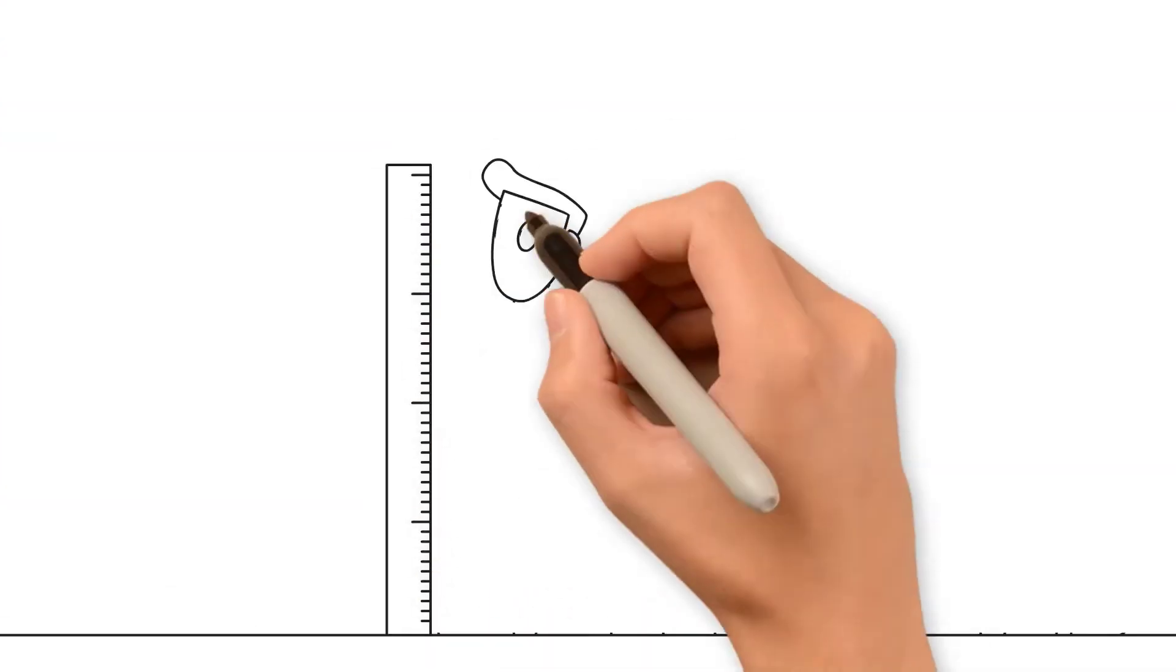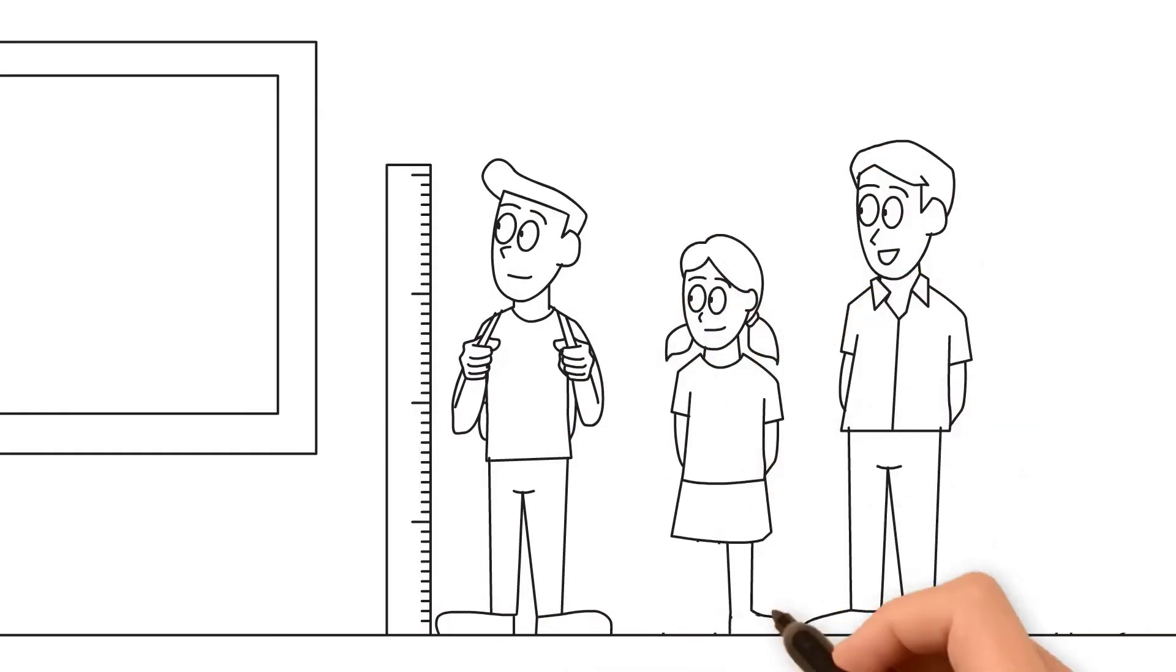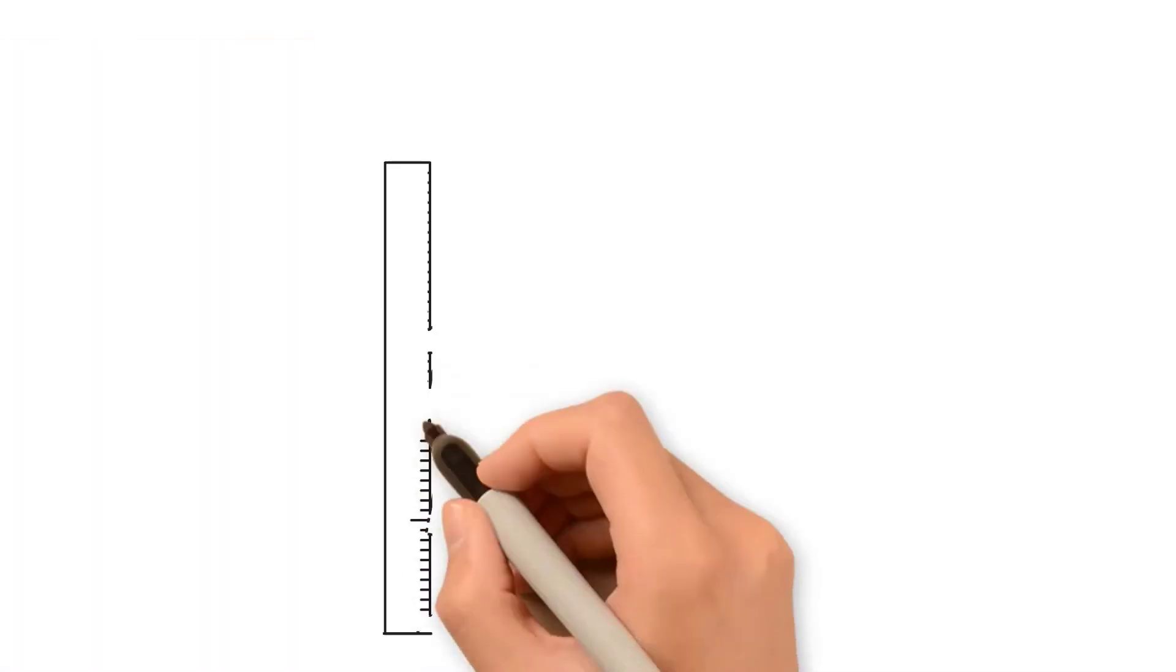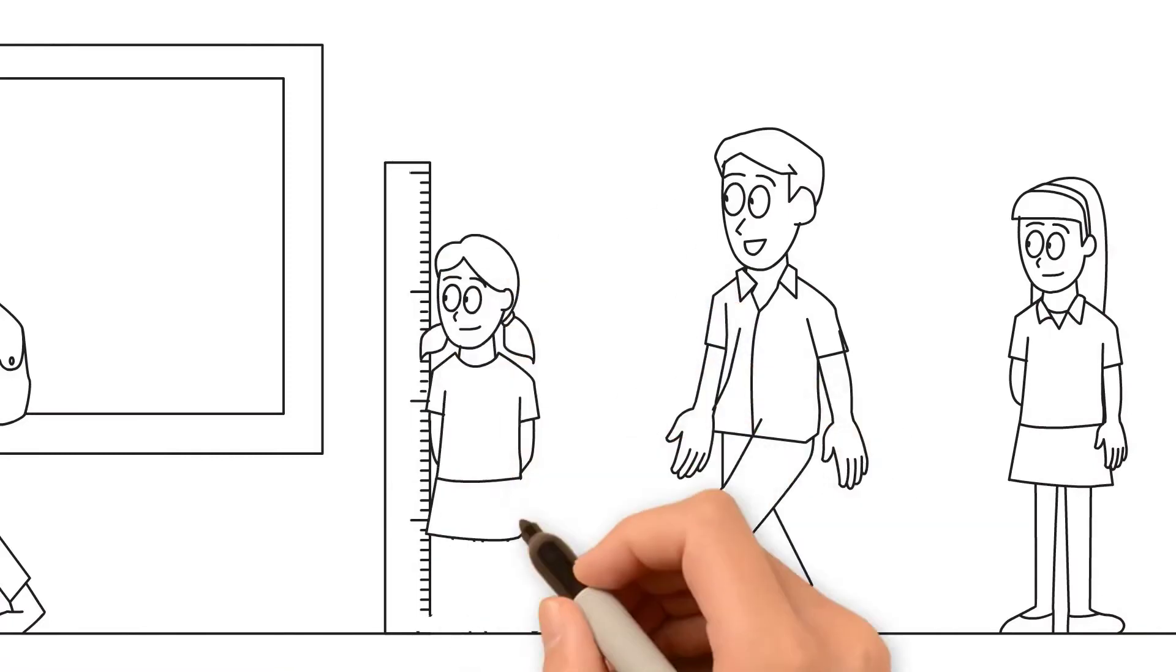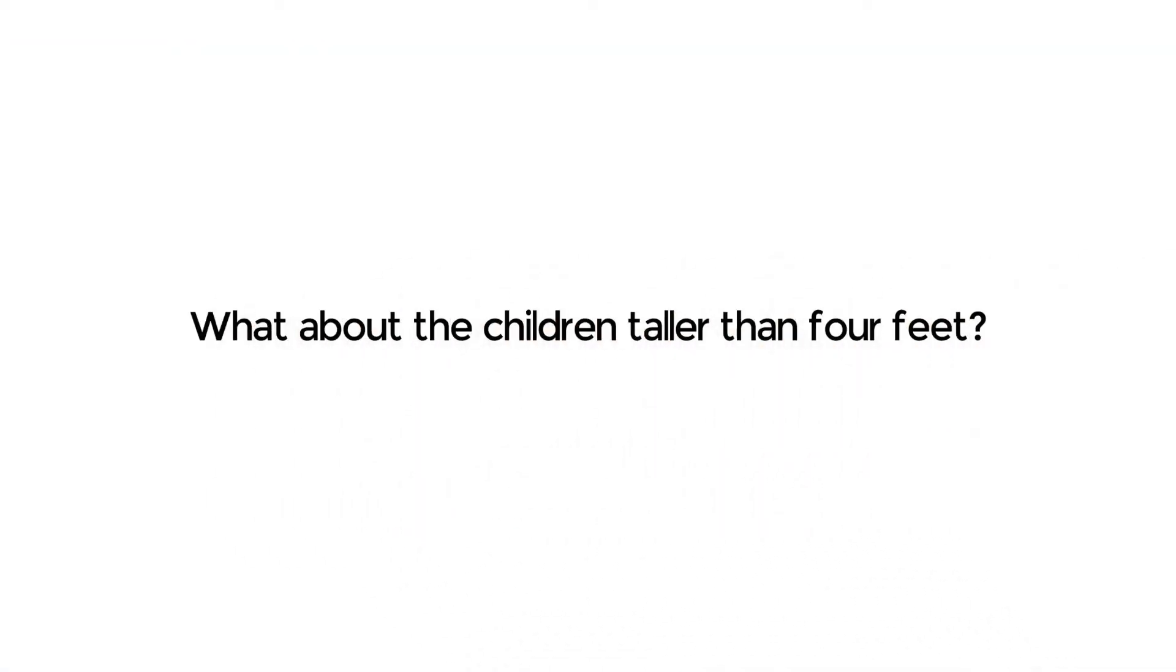Here's another way to think about it. Imagine we want to measure the height of every child in a class, and we decide to use a 4-foot ruler to take these measurements. Would we be able to accurately measure the height of every child who is below 4 feet tall? Definitely. But what about the children taller than 4 feet?